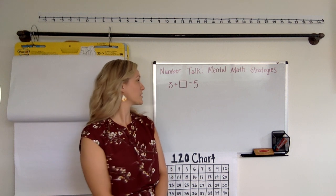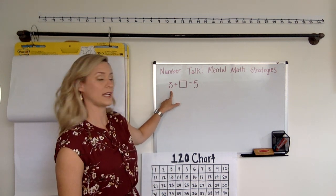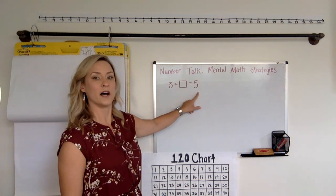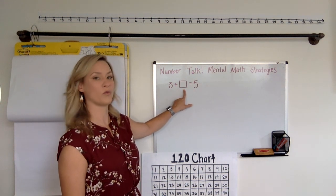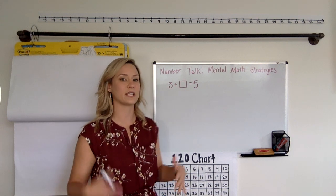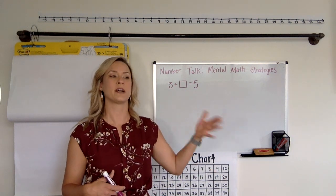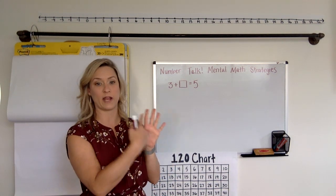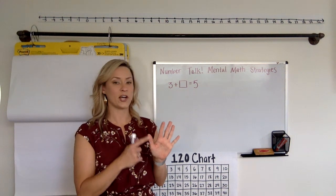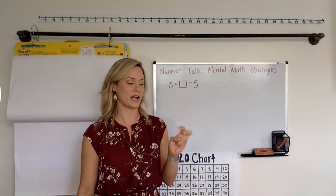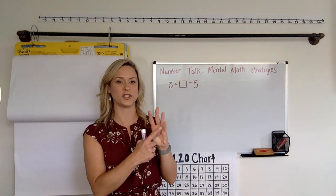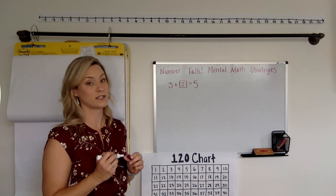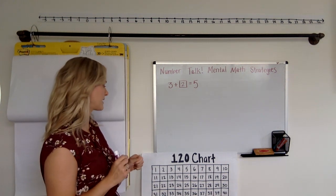So the first thing we're going to do is called a start change unknown. So we have 3 plus what makes 5. So the kids are going to be asked to do 3 plus what number would make 5. Now, you probably will see a lot of finger math going on for this because we have 5 fingers, right? And they know if they start with 3 fingers up, you have to add 2 more to make 5. So they would probably use their fingers for this one. 3 plus 2 makes 5.